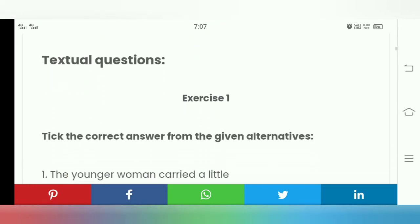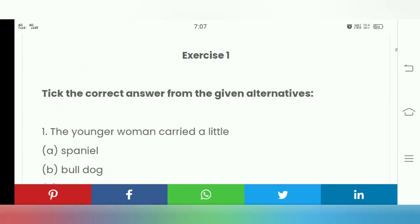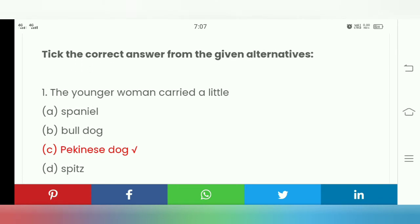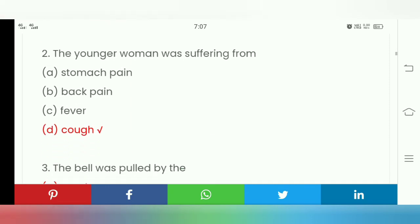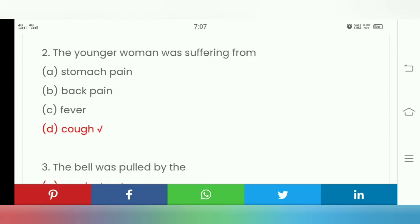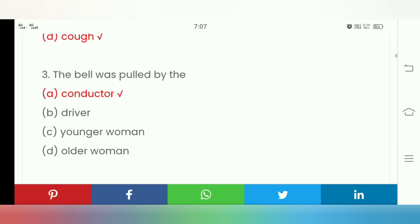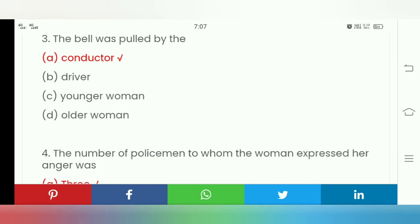Exercise 1: Choose the correct answer from the options given below. The younger woman carried a little - the young woman was carrying a small Pekinese dog. The young woman was suffering from cough. The bell was pulled by the conductor.